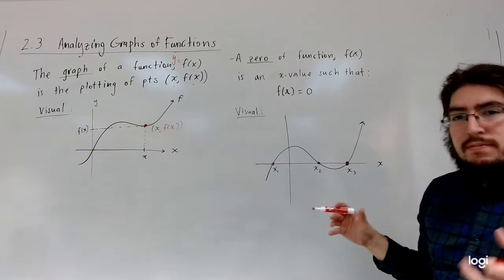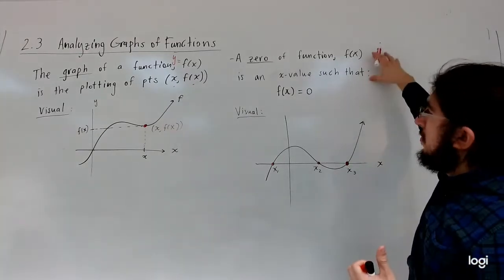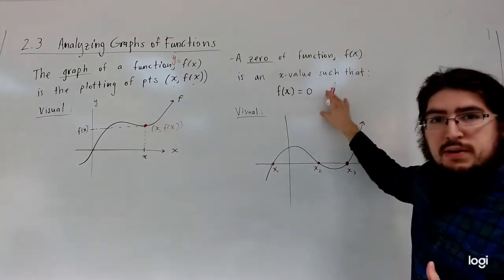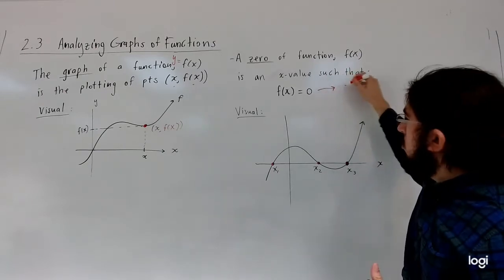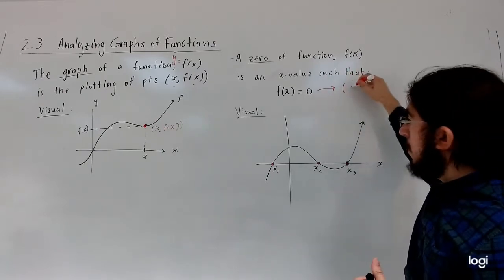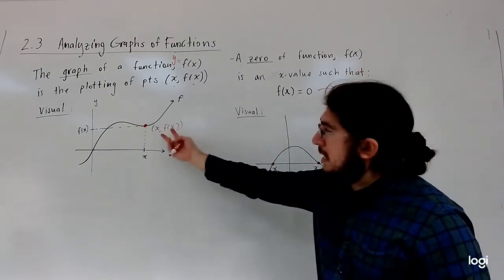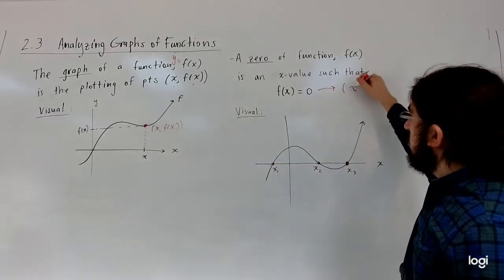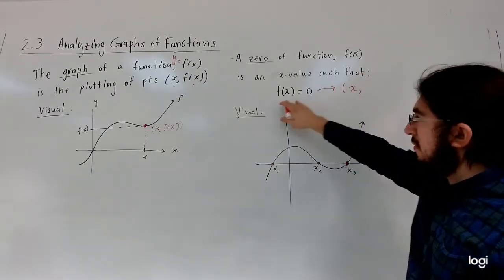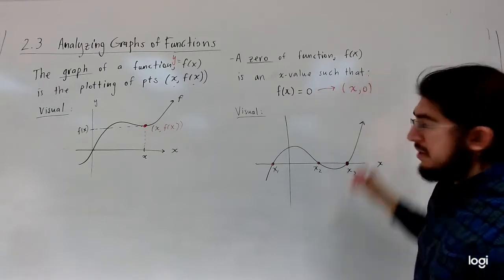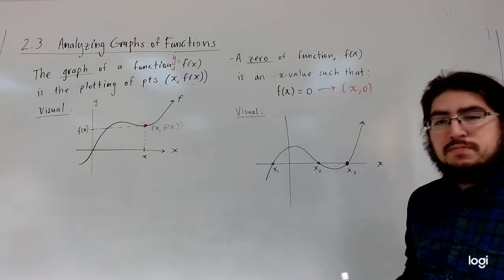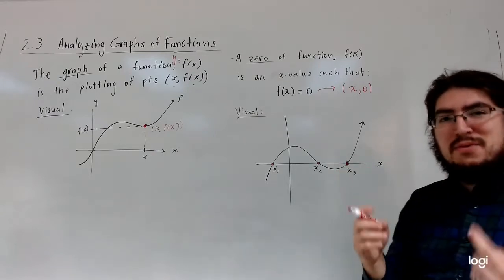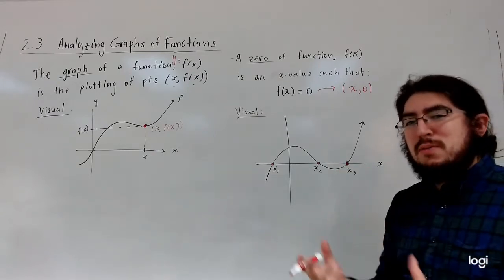Next we define zero: the zero of a function f of x is an x value such that f of x is zero. So the points are of the form x, f of x, and the y value will be f of x, which is zero for all of these zeros. So a zero is not the number zero, but it's a number that gives you zero when you plug it into the function.